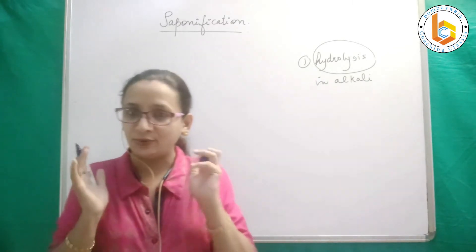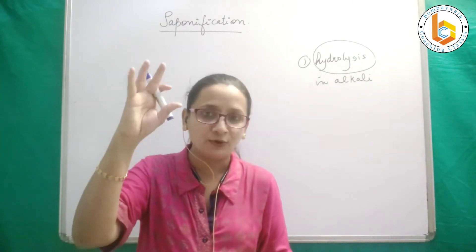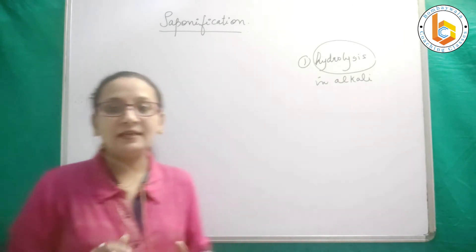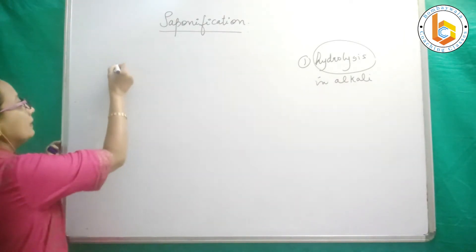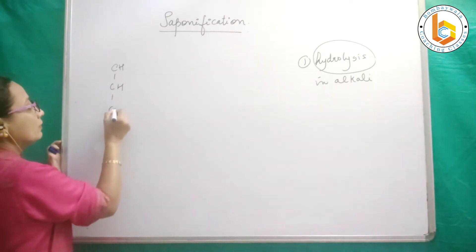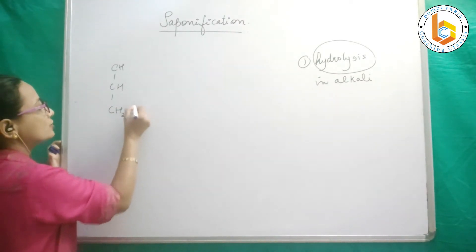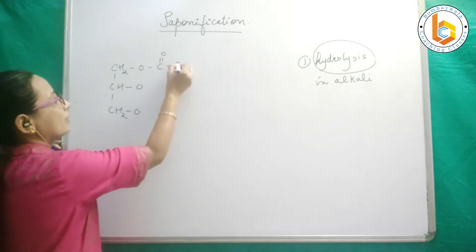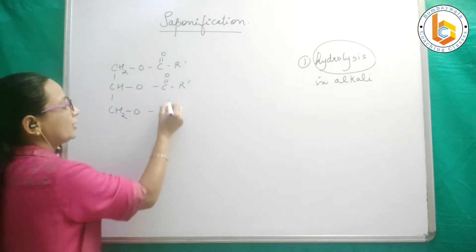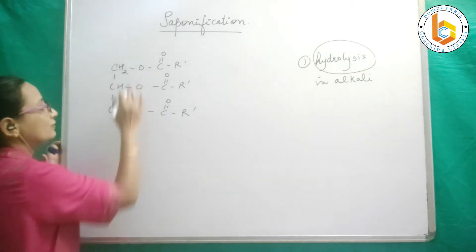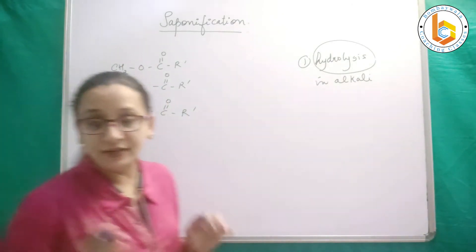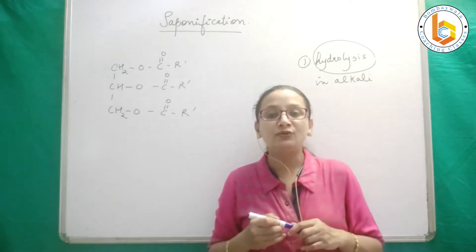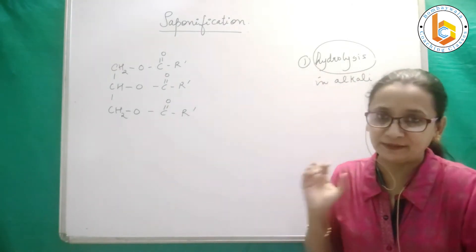What is hydrolysis? It is breaking down in presence of water. And when it is breaking down in presence of alkali, it will be called alkaline hydrolysis and this is called saponification. Let us see, for example, your fats or oils: CH2O, CH2O, and this is your COR dash. This is nothing but ester of long chain fatty acids with triglyceride or glycerol, and together they form a triglyceride.